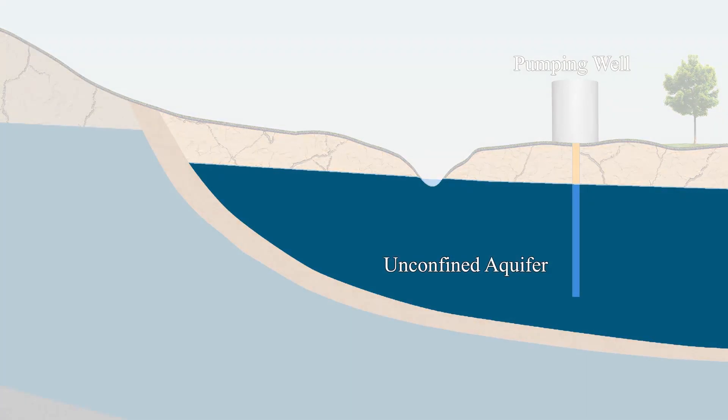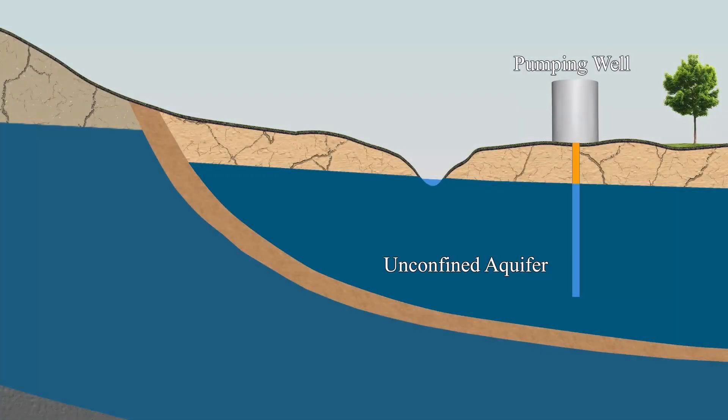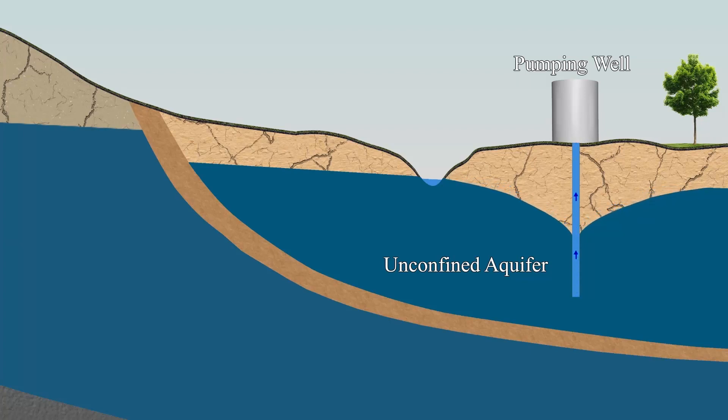Confined aquifers function differently than unconfined aquifers, which have no overlying aquitard. Unconfined aquifers occur near the Earth's surface, so they may interact better with the processes that occur near or above land surface. Because unconfined aquifers are exposed to the atmosphere, they may interact with surface water features such as rivers or lakes. If the water level in the aquifer is higher than in the adjacent rivers or lakes, the rivers or lakes gain water.